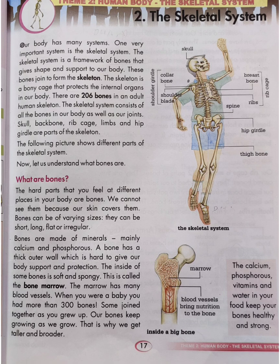A bone has a thick outer wall which is hard, to give our body support and protection. The inside of some bones is soft and spongy — this is called the bone marrow. The marrow has many blood vessels. When you were a baby you had more than 300 bones. Some joined together as you grow up. Our bones keep growing as we grow, which is why we get taller and broader.